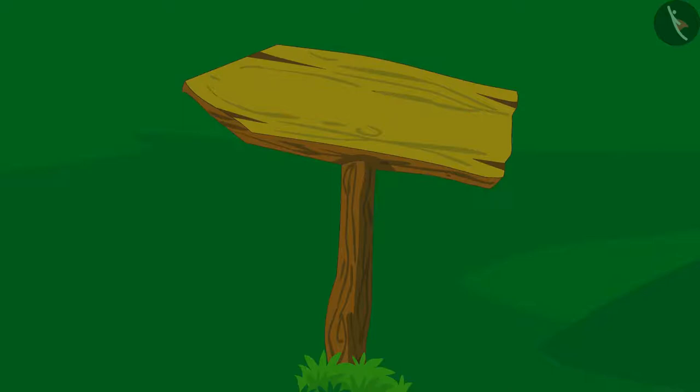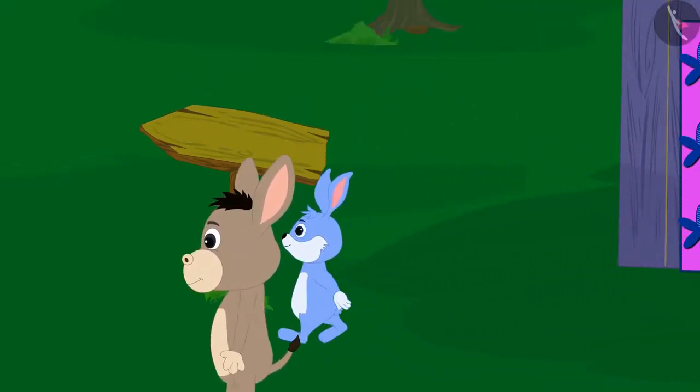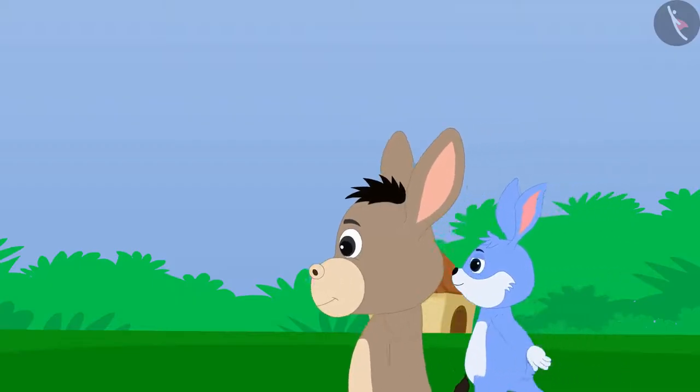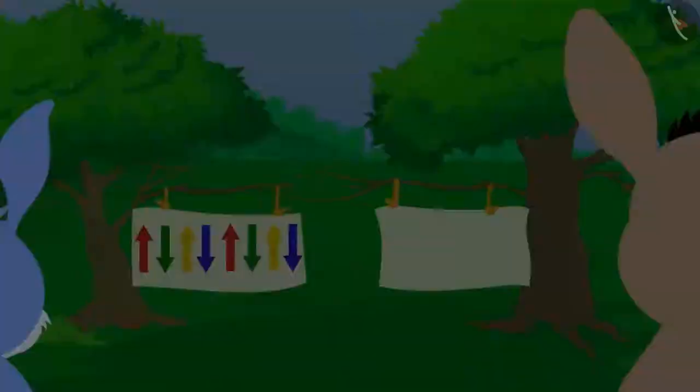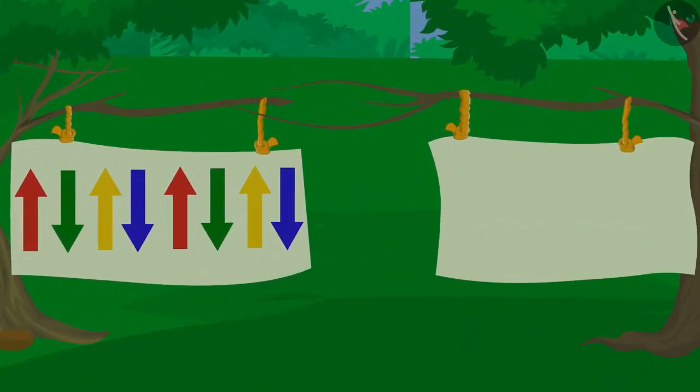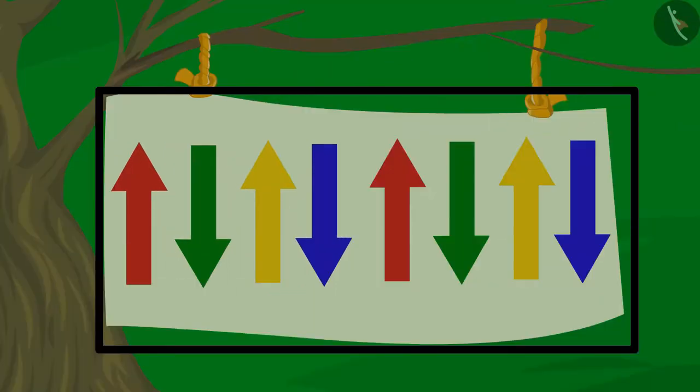Bola and Bunny quickly walked in that direction of that arrow. At some distance they saw a curtain between two trees. The curtain is divided into two parts.